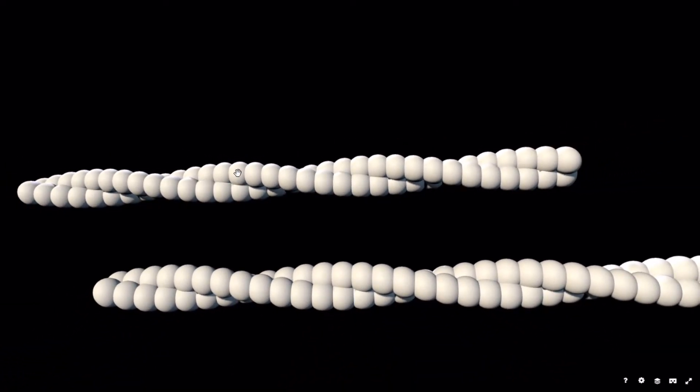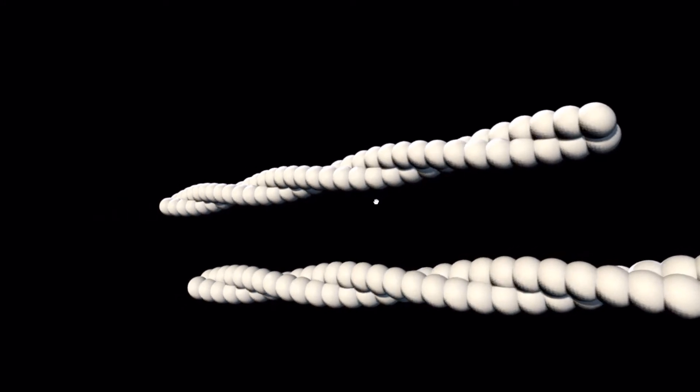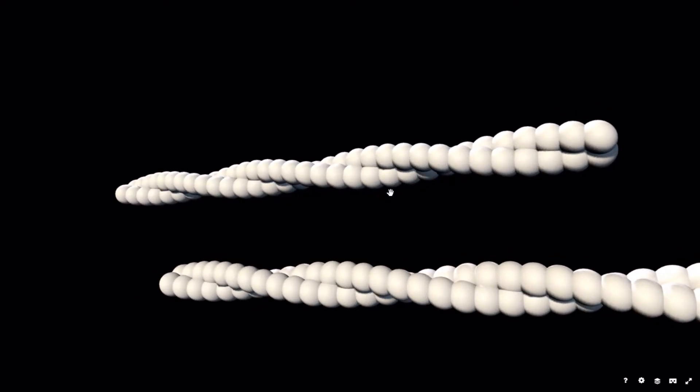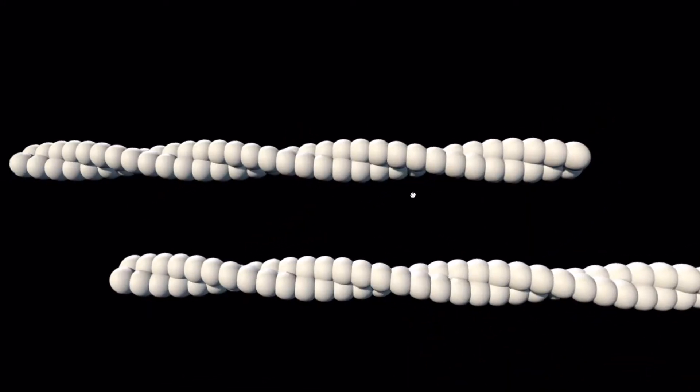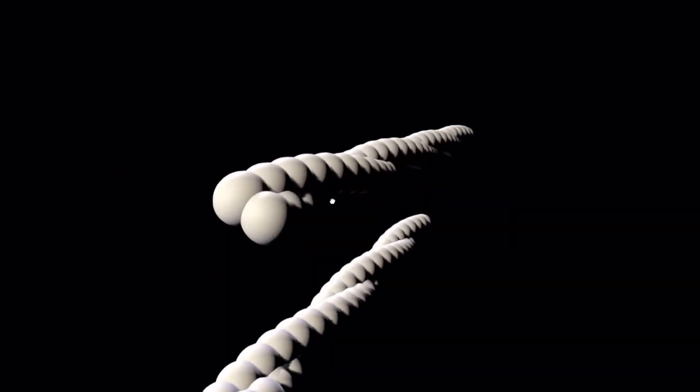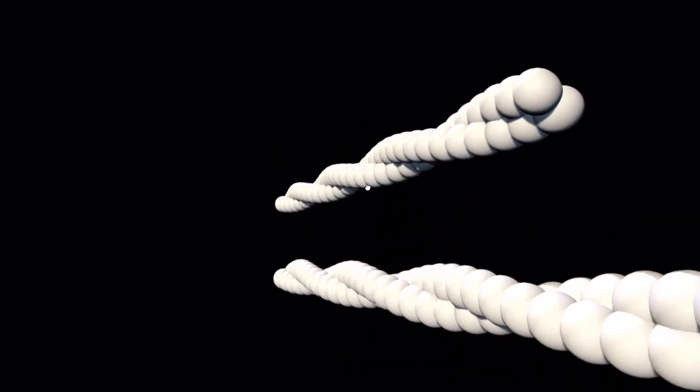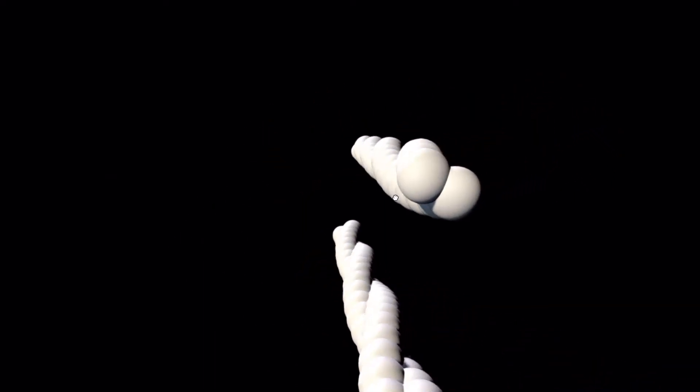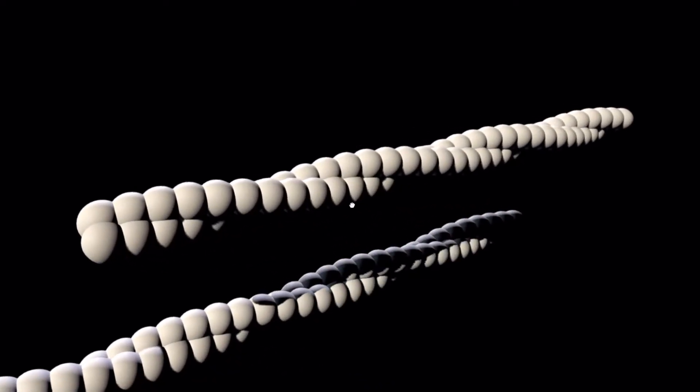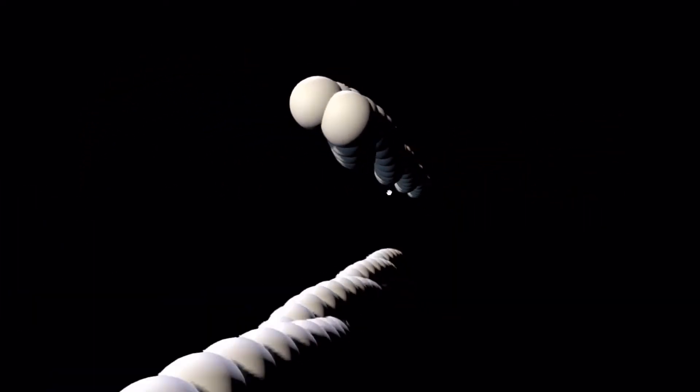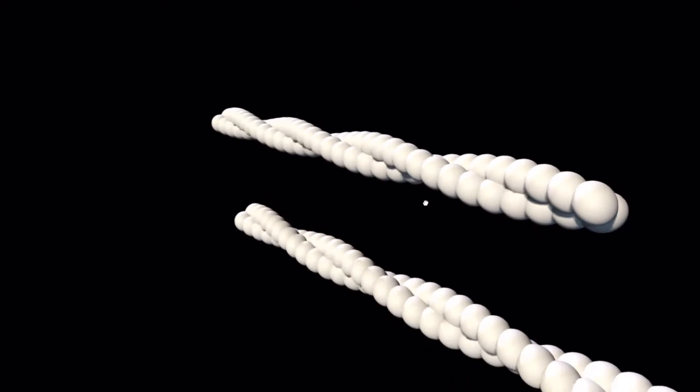Because why? Now those monomeric units of G-actin are joined together to form this fiber-like structure. So as you can see here, the actin filaments sort of look like two intertwined strands of ropes.